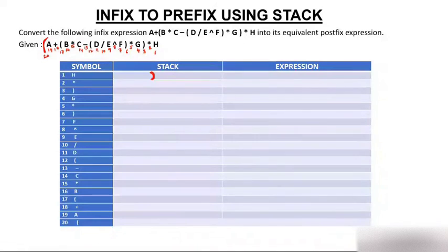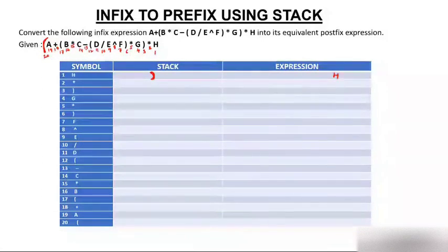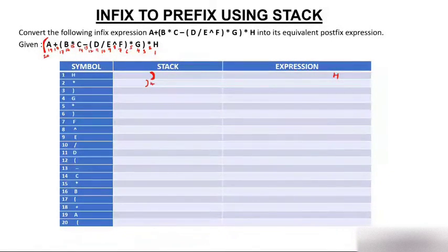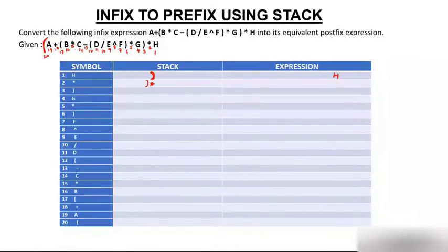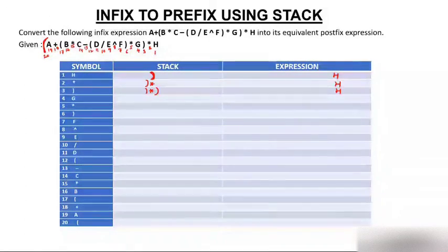Let's start solving. We first encounter operand h — since it's an operand, h goes to the expression from the right. Then we get multiply (*), which is an operator, so it goes onto the stack. Then we encounter a closing bracket, and we still have only h in the expression.